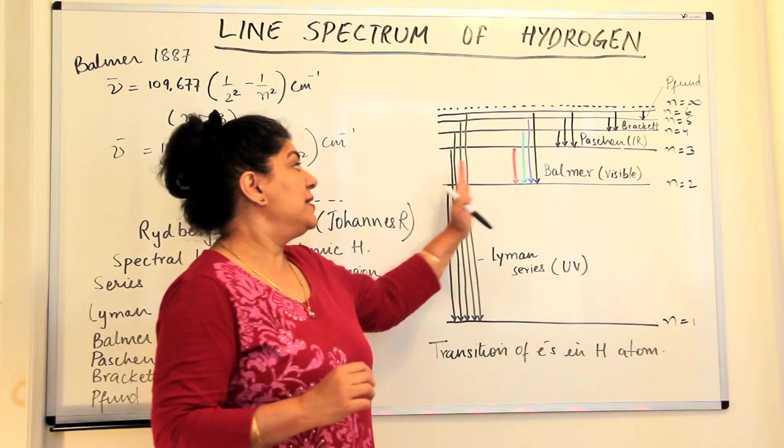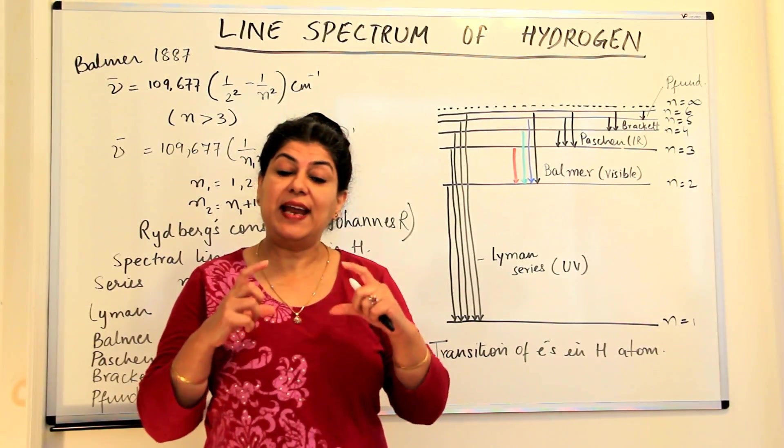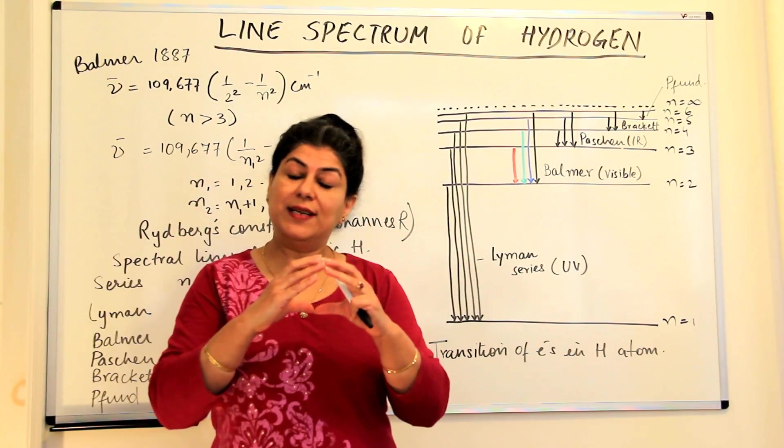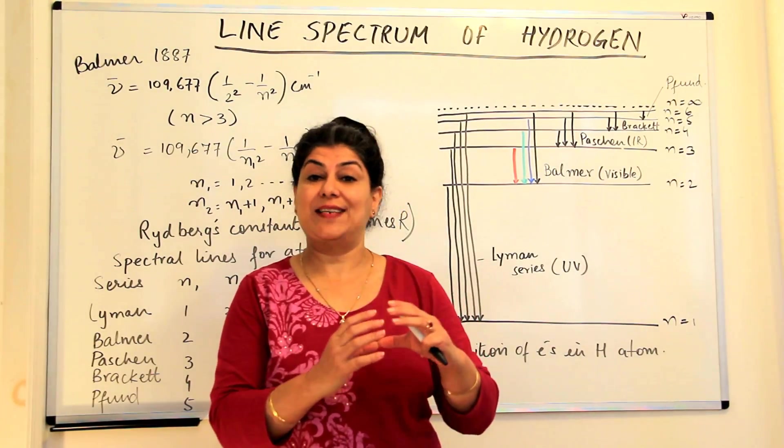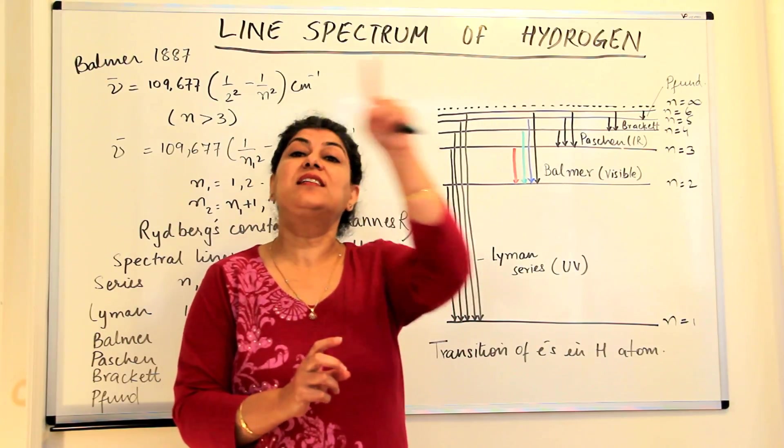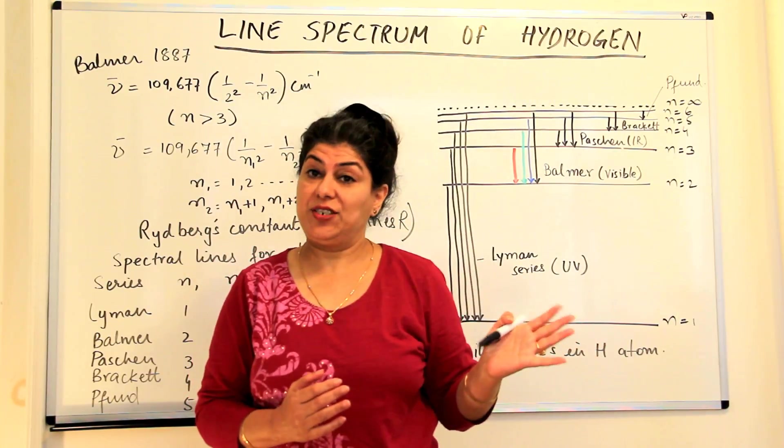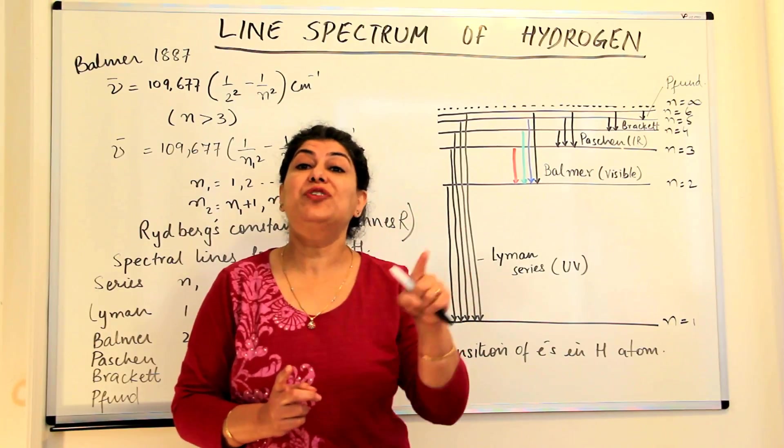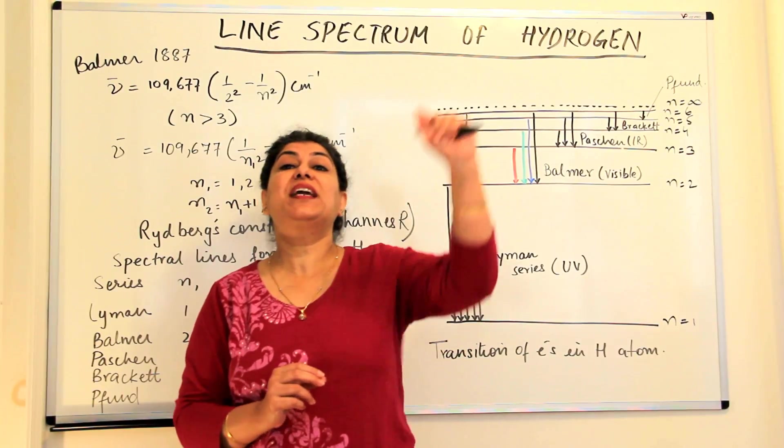So how could these series be explained? Bohr imagined that atoms are like the solar system. The nucleus is in the center, because by now we knew the existence of a nucleus, and there are orbits, energy levels in concentric circles around it. Electrons cannot be present anywhere around the atom, they can be present only in allowed orbits around the nucleus, and these orbits have specific energies.